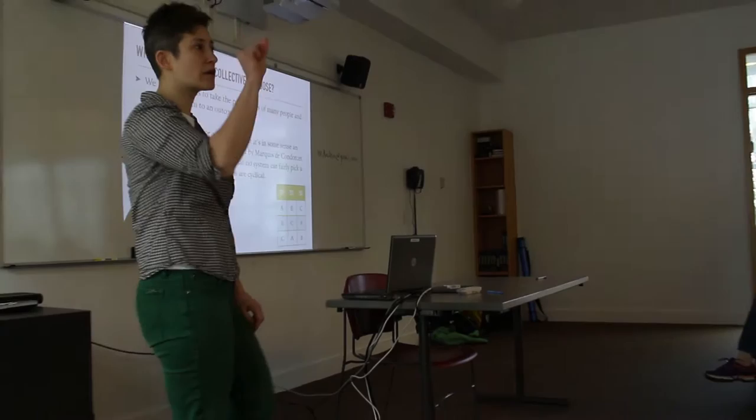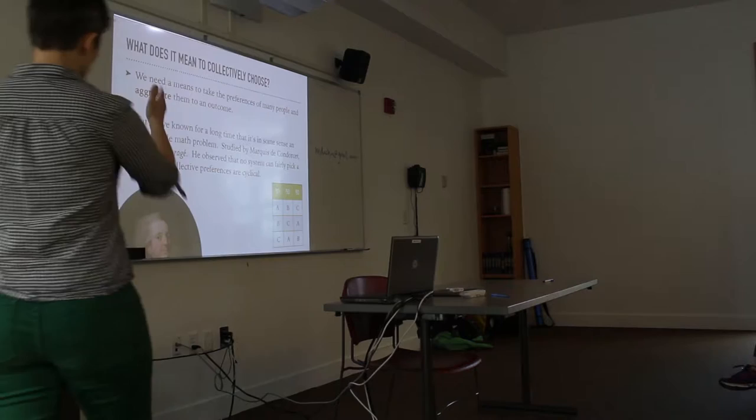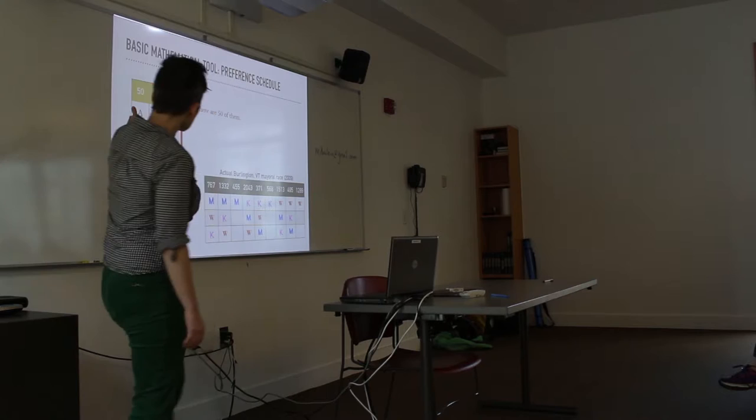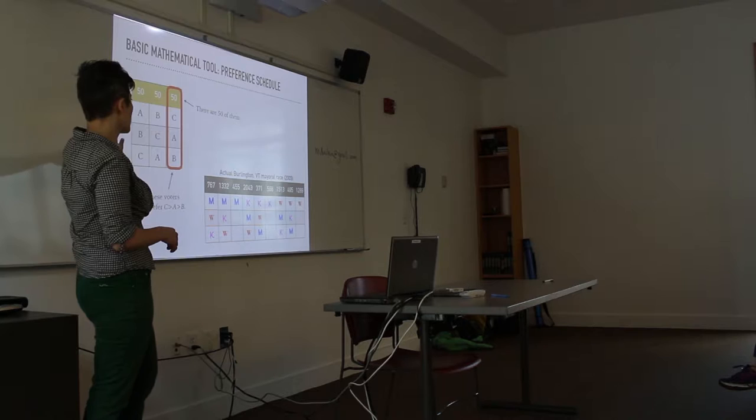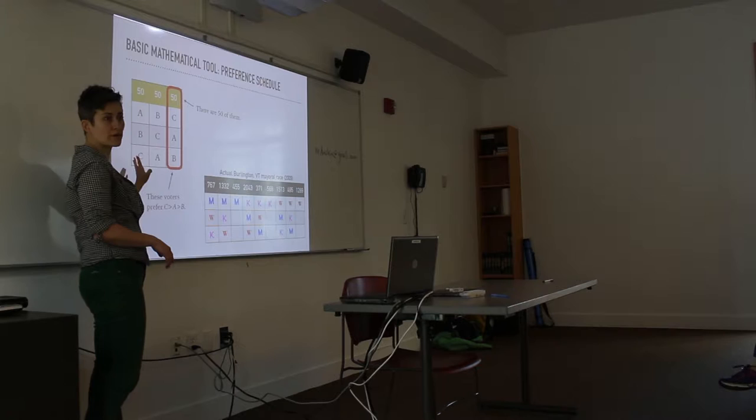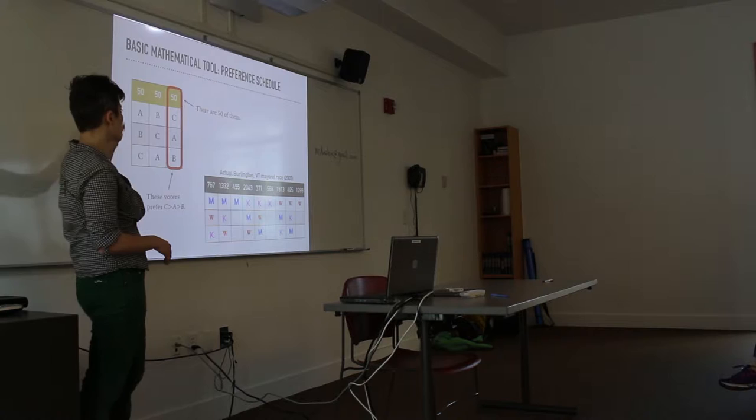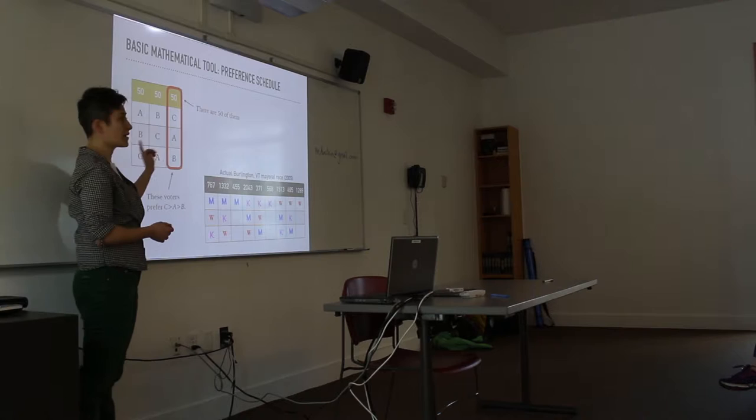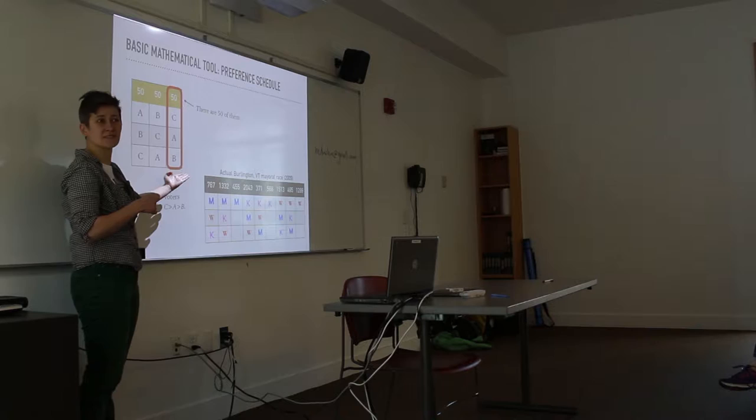So, here's just a toy example. Suppose you have a preference schedule, that's going to be the framework that mathematicians use for recording preferences. So, here are 150 voters, and 50 of them prefer C to A to B, which is why you see that preference order in the column. So, this is recording everyone's preferences. And you see the problem? Every individual has coherent preferences, but collectively, this society prefers A to B by 100 to 50, B to C, and C to A. You have cyclical preferences.